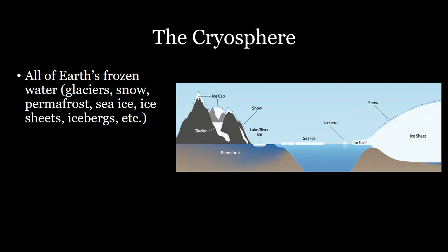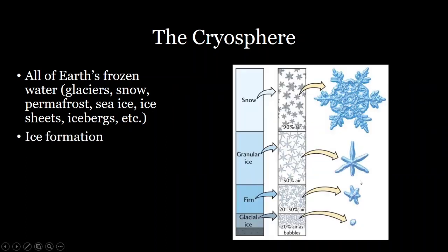This includes all the glaciers, snow, permafrost, sea ice, ice sheets, and icebergs, and so on. The ice in these systems can move around and melt and contribute to the hydrologic cycle.